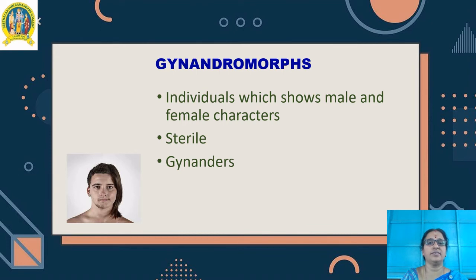Gynandromorphs are the individuals which show male characters on some parts of the body and female characters on other parts of the body. They are also called gynanders and they seem to be rare in nature. They occur in Drosophila, butterflies, beetles, wasps, bees, and silkworms.